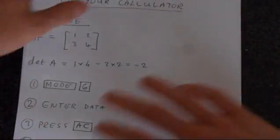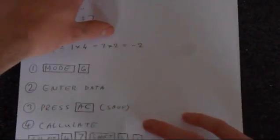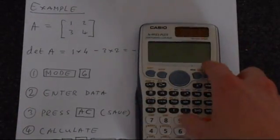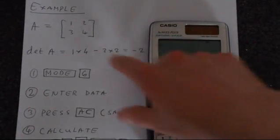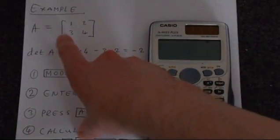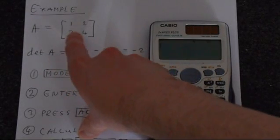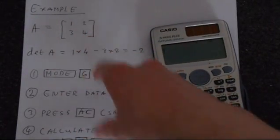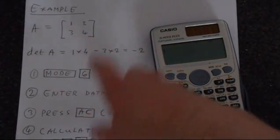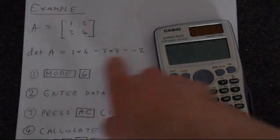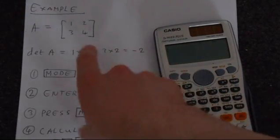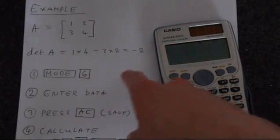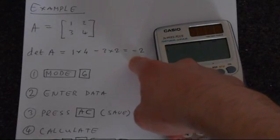The best way to learn is to just do an example straight away. So here's the calculator. The one we're going to do is a very simple one — we'll call it matrix A with elements 1, 2, 3, 4. From the theory, the determinant is clearly 1 times 4 minus 2 times 3, so you're going to get minus 2.